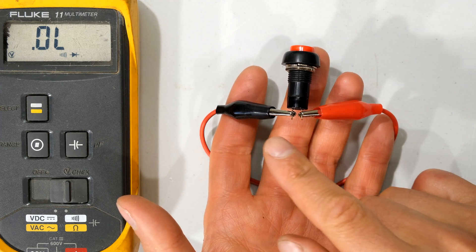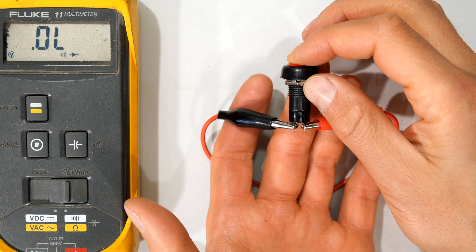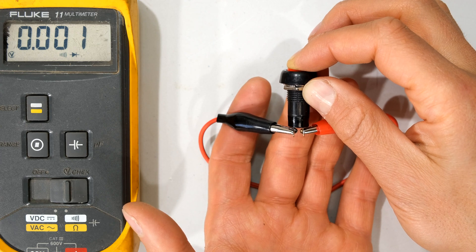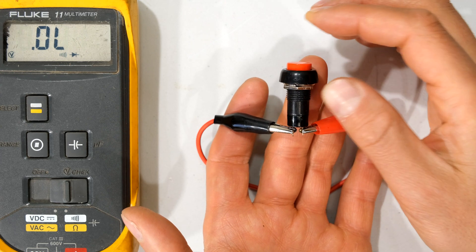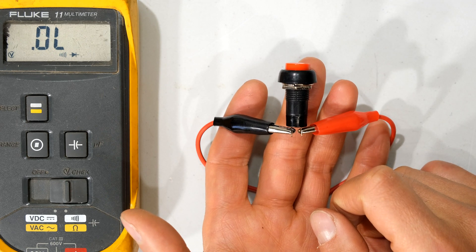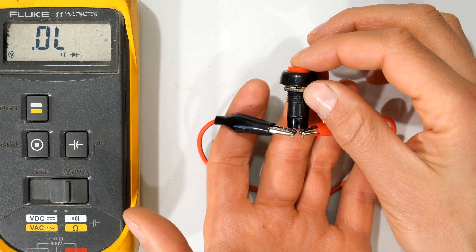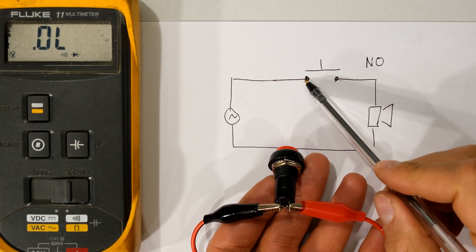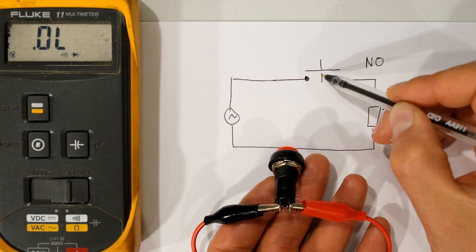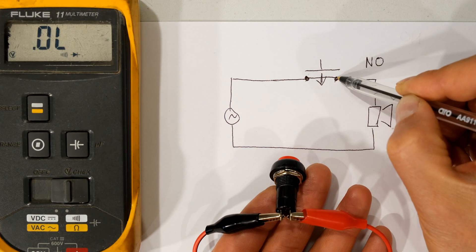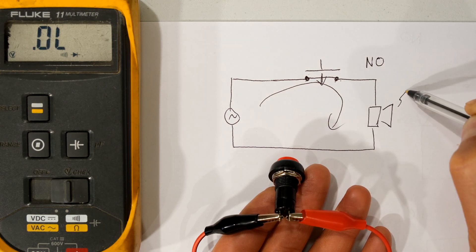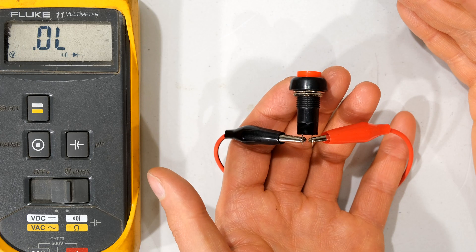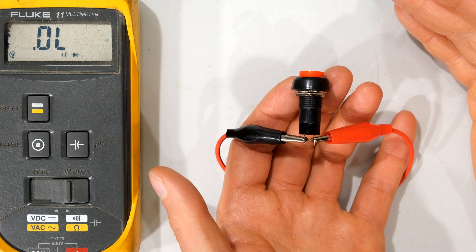I've connected one lead to one terminal and the other lead to the other terminal. Watch what happens when I depress the button — it's closing the circuit, you can hear the buzzer. Notice that when I've released the button and the switch is at rest, it is an open circuit. When I push it, it is now a closed circuit. There are two contacts and a platform — when I depress the platform it shorts out those terminals and current can flow. This is called a normally open switch.